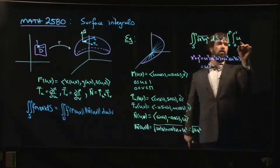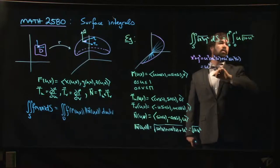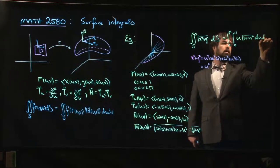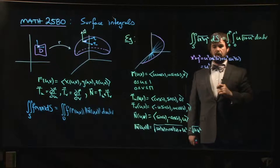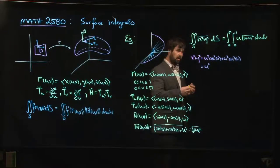Multiply by the magnitude of the normal vector, square root of 1 plus u squared, du, dv. Not so bad, right? From here you can evaluate it if you had to.